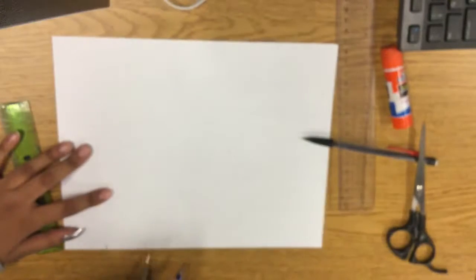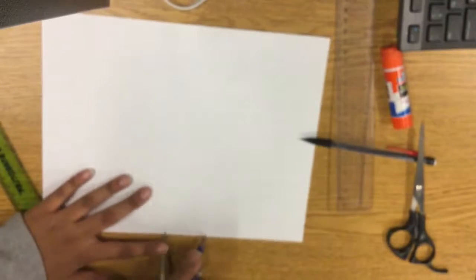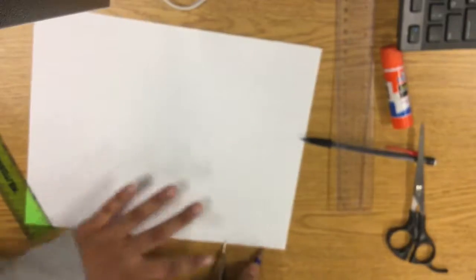I'm starting off by putting five dash marks along the bottom of my paper and the top of my paper. Make sure they are all equal.